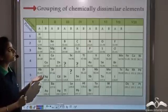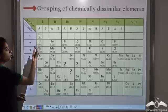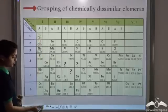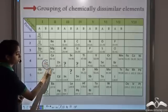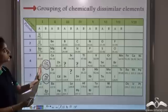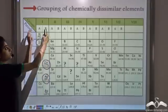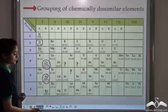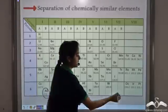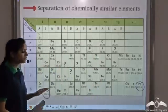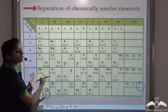Another problem was that he had grouped some chemically dissimilar elements together. He placed elements in separate groups A and B — elements in group A have the same properties and elements in group B have the same properties. But he placed copper and silver in group 1 along with elements like lithium, even though they are not chemically similar. Similarly, he placed chemically similar elements like gold and platinum wide apart in the periodic table.